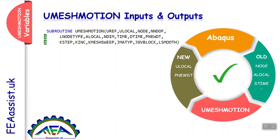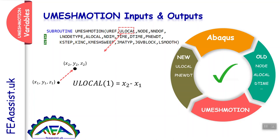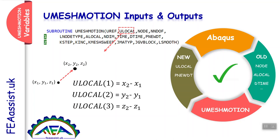Abaqus uses these variables again to recompute node positions and all the necessary variables. This is how Abaqus and UMESHMOTION interact with each other, which is necessary to well understand to write a well-working UMESHMOTION subroutine. Here I explain one of the variables: U_local. Consider you have a point (x1, y1, z1) that is going to be transferred to point 2. U_local[1] is the displacement or velocity in the X direction, U_local[2] in the Y direction, and U_local[3] in the Z direction.